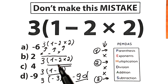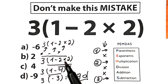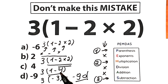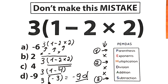First we found our parentheses; inside the parentheses we had two signs — a multiplication sign and a subtraction sign. First we multiplied, because multiplication has a higher position than subtraction and therefore higher priority: 2 times 2 equals 4. Our third step was subtraction, because the subtraction sign is inside the parentheses: 1 minus 4 equals negative 3. Our last step was multiplication: 3 times negative 3 equals negative 9. This is option D — the correct answer, the correct approach, the correct solution.